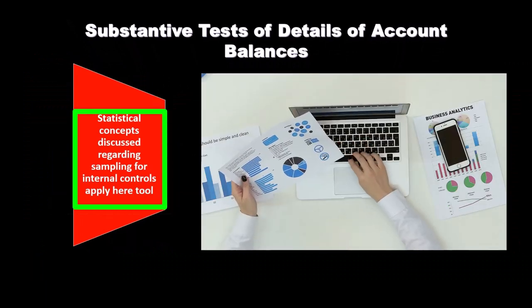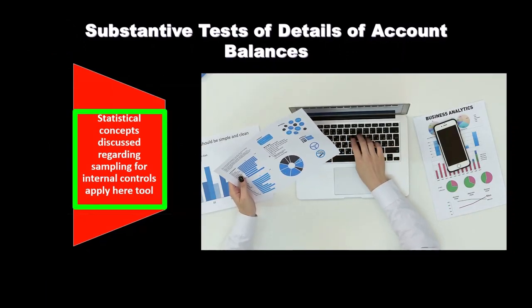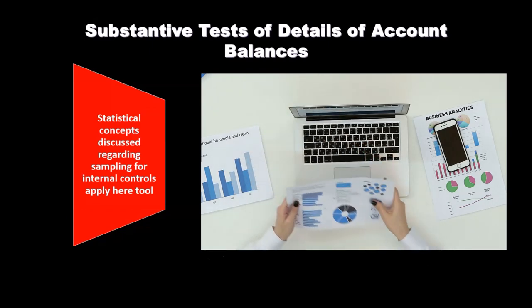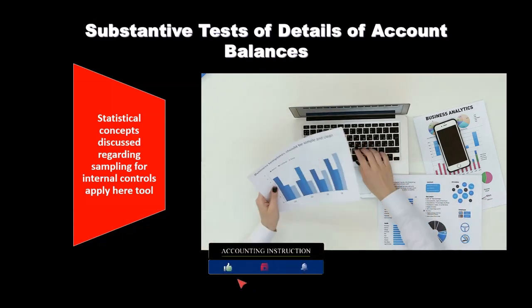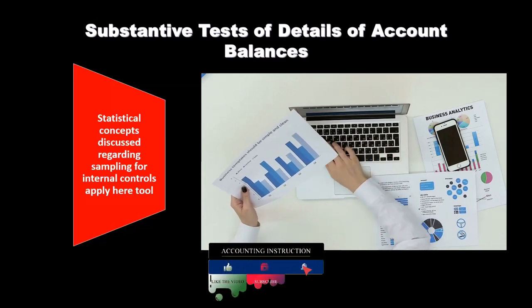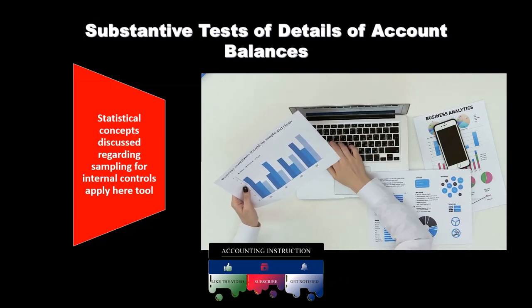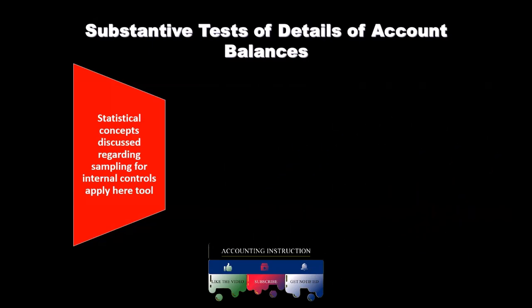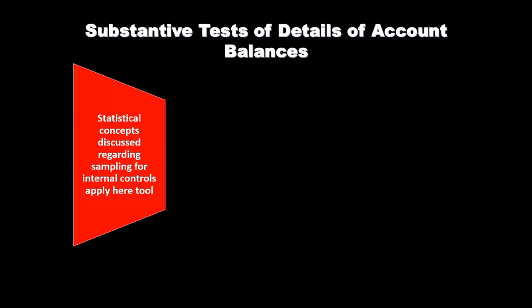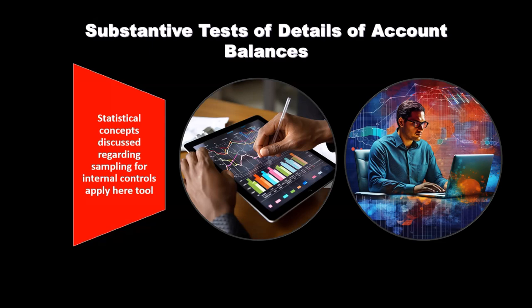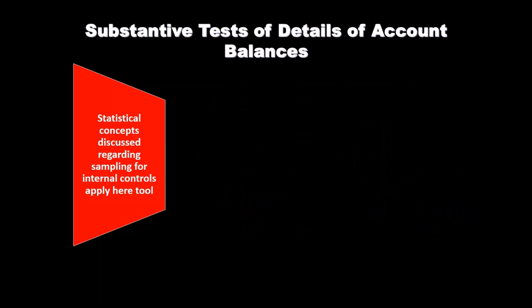Statistical concepts discussed regarding sampling for internal controls also apply here. In prior presentations, we took a look at statistical sampling methods with regards to testing of controls. Now we're considering the substantive testing. We're going to be testing the controls — those checks and balances — and then hopefully be able to do less substantive testing. However, some of the procedures and sampling methods we use for testing controls are often used within the substantive testing as well.